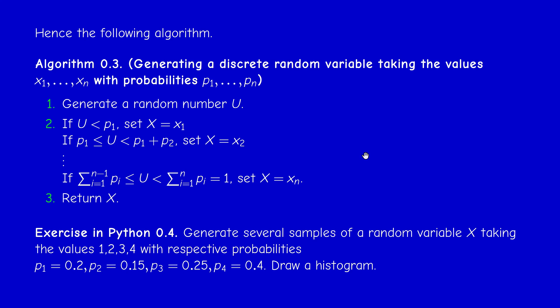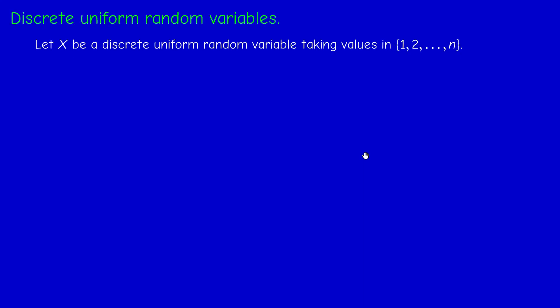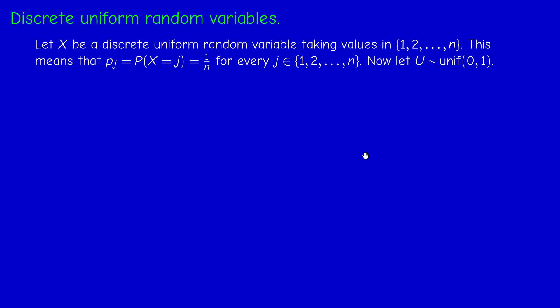Now let us see particular cases. This is the general algorithm, so let us see how one can generate, in an easier way, a discrete uniform random variable between the values 1 and n. We actually did that when we simulated the roll of a die. A discrete uniform random variable takes the value j with probability 1 over n, so all the probabilities are equal.